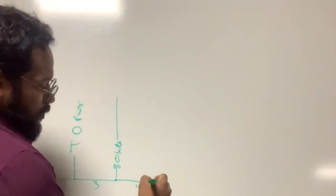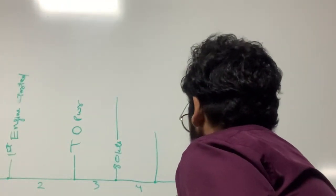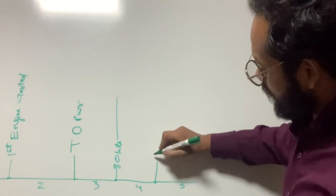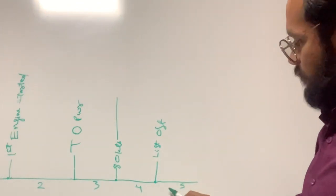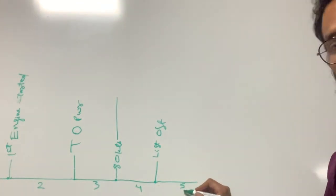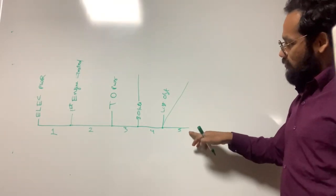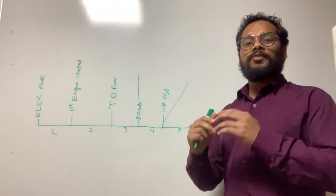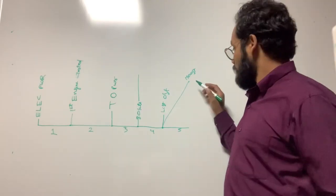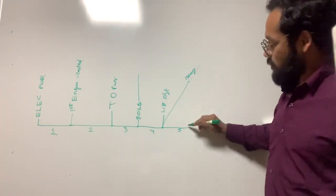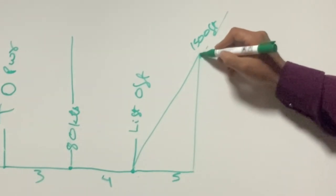Phase 4 continues till you do lift-off. When you have done lift-off, phase 5 will start. Phase 5 continues till 1500 feet — we know takeoff ends at 1500 feet. So flight phase 5 goes up to 1500 feet.